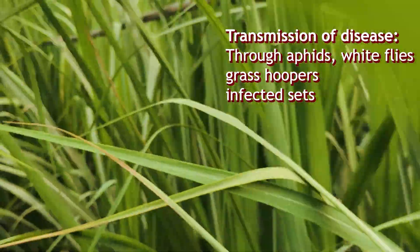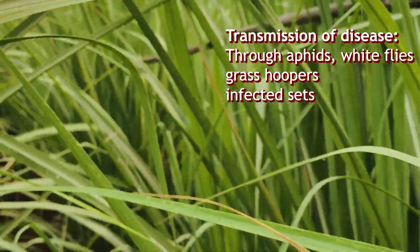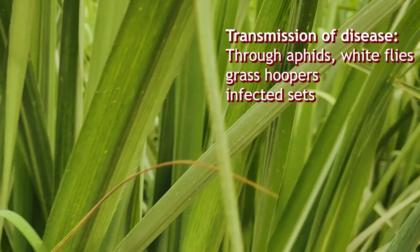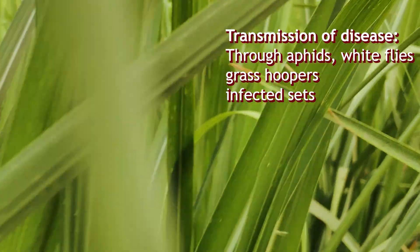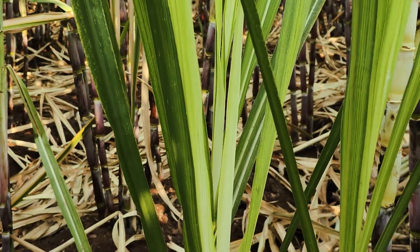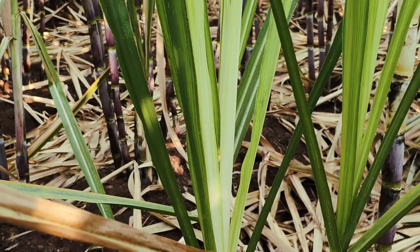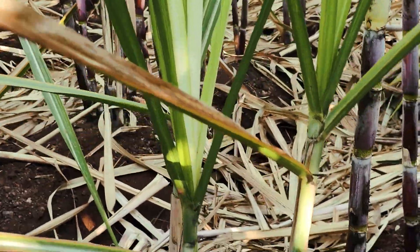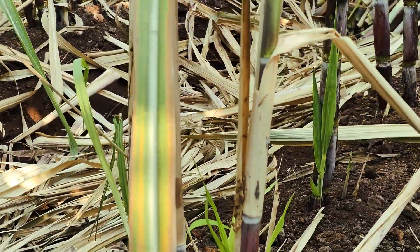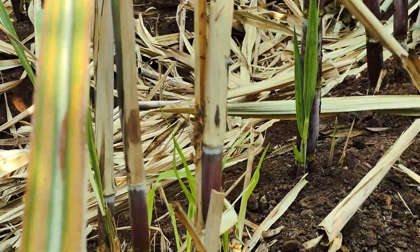It can also spread through the infected sets — the cuttings used for planting new sugarcane crops. Once the plant is infected, the disease spreads internally through the phloem, affecting its overall growth.